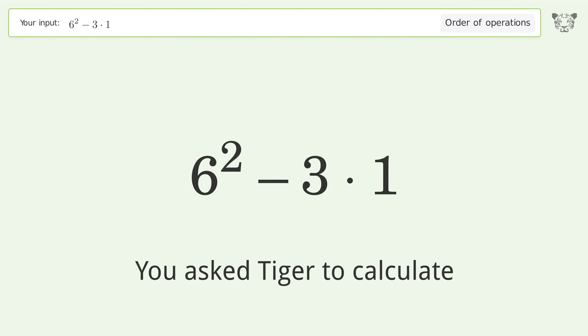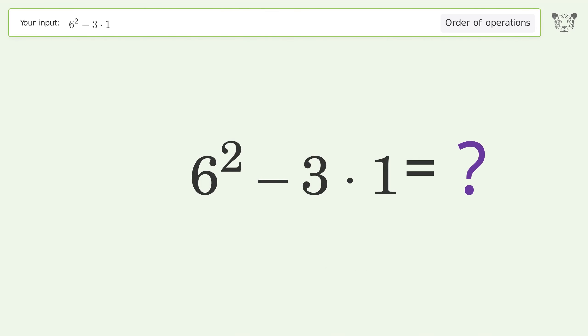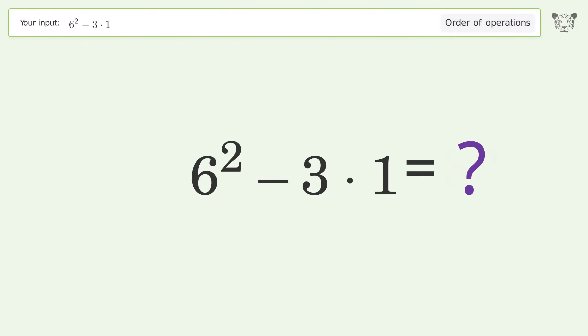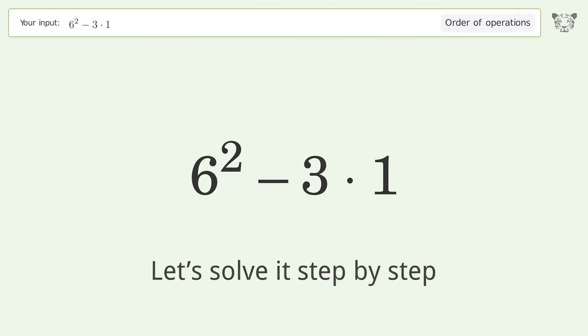You asked Tiger to calculate this. It deals with the order of operations. The final result is 33. Let's solve it step by step.